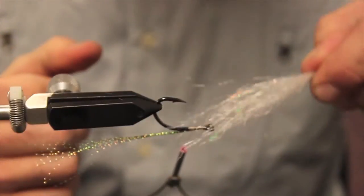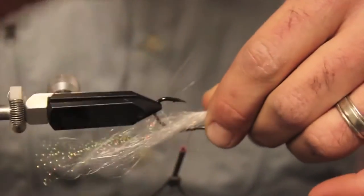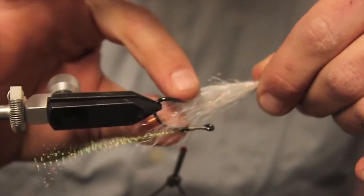So then right here, you want to kind of just split the fibers on the hook. So you try to get even amounts on both sides as best you can.